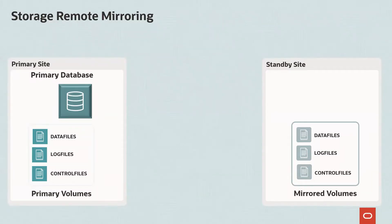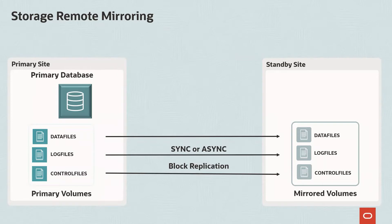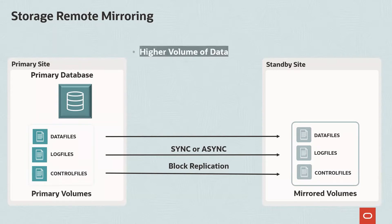Storage Remote Mirroring involves copying data from one storage array to another. Data replication occurs at the block level. Storage Remote Mirroring replicates every write made to data files, redo log files, and control files. Thus, it requires replicating a higher volume of data than Active Data Guard.